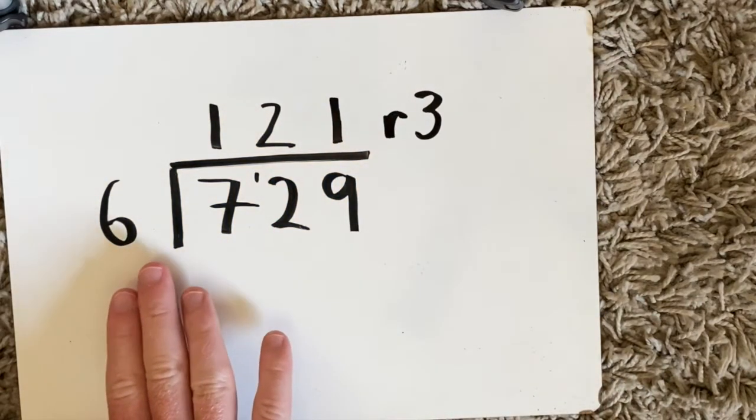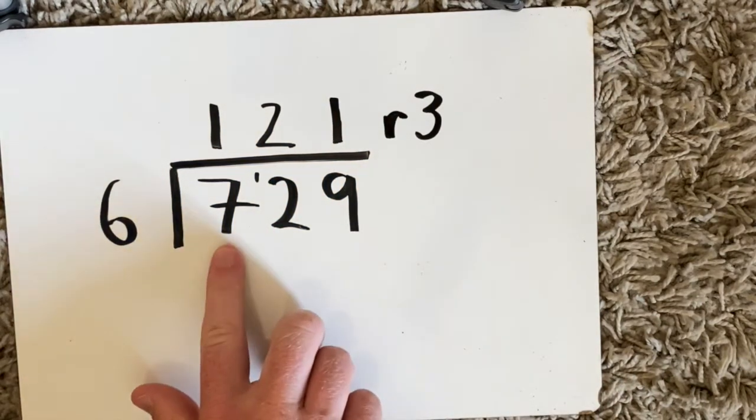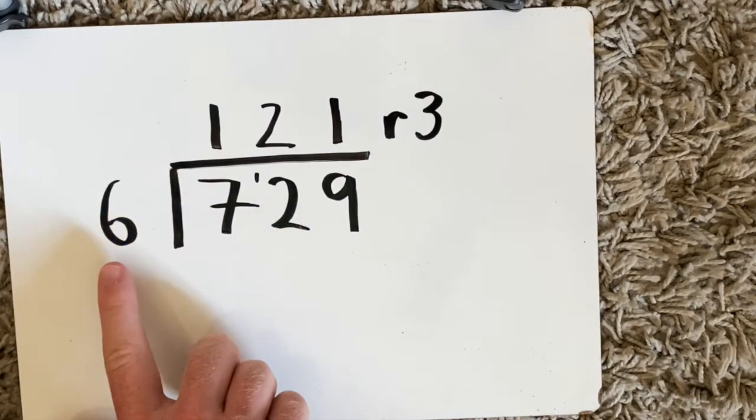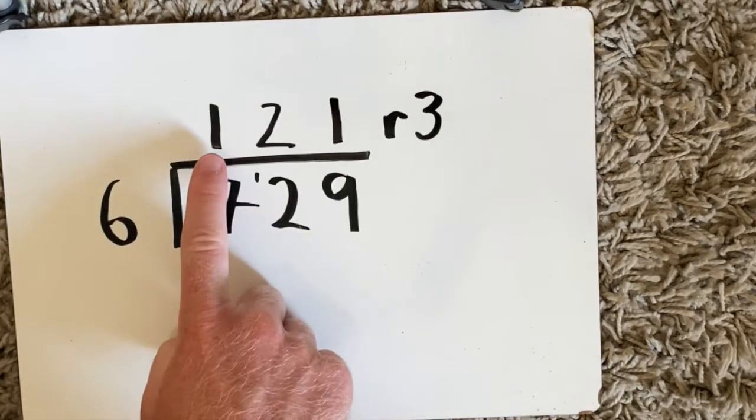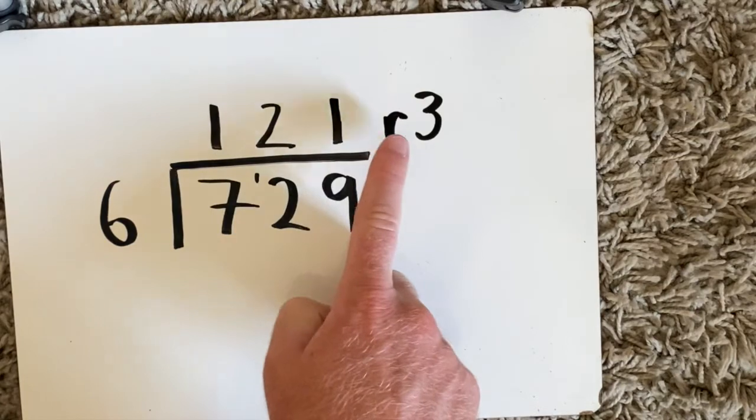As you can see here I've just finished the question 729 divided by 6. The answer was 121 remainder 3.